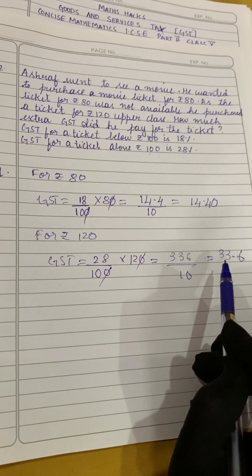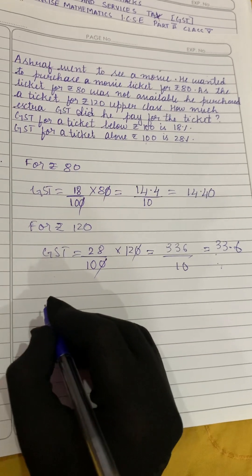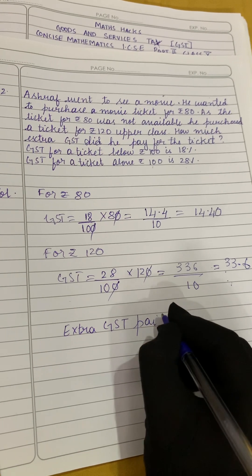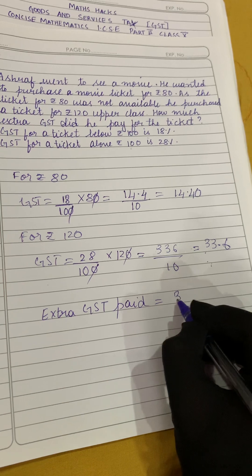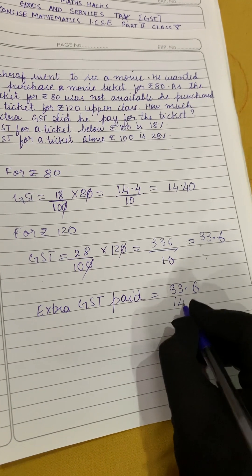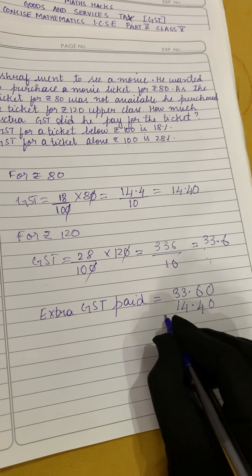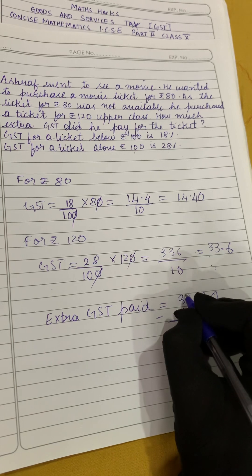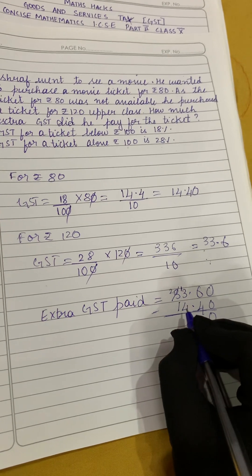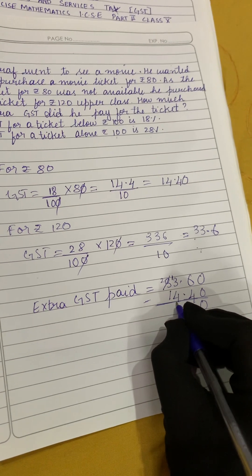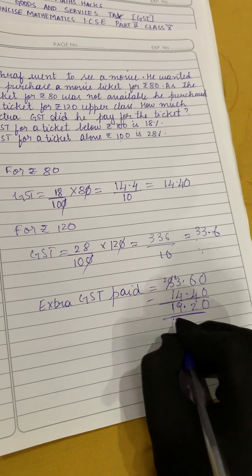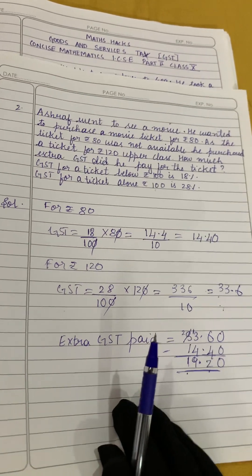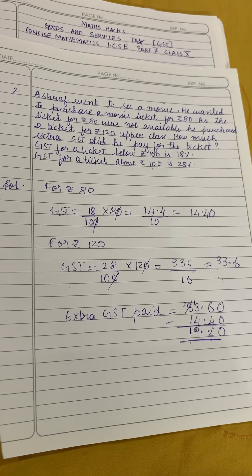To find out how much extra GST Ashraf paid, we subtract the two amounts. Extra GST paid by Ashraf equals 33.60 minus 14.40. Performing the subtraction: 33.60 minus 14.40 equals rupees 19.20. So the extra GST Ashraf had to pay is rupees 19.20. That's all for today — I hope you liked the video. Please subscribe, like, share, and comment. Thank you for watching.